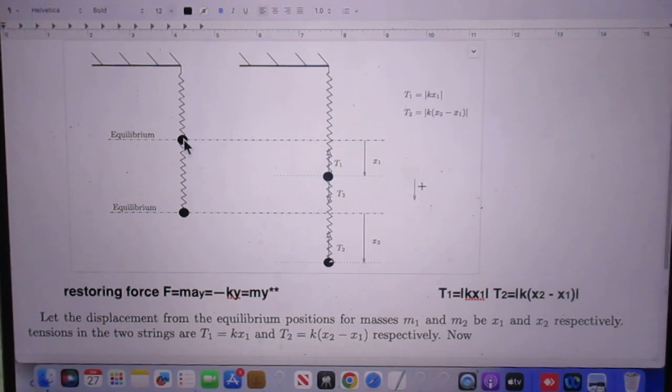I offset object number one in this direction over a distance x1, and then there will be a restoring force T1 in this direction. I offset number two, x2 in this direction. That means there will be a restoring force in this direction, which is T2. Since the force in this spring is everywhere the same, this T2 acts downwards here on point number one.